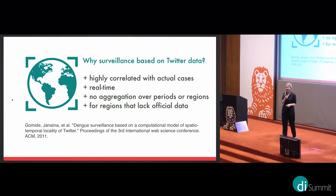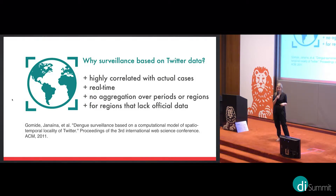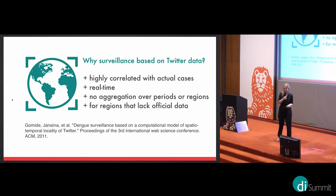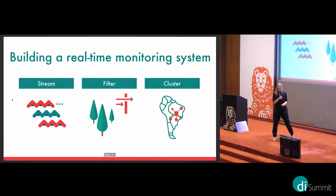Twitter data is also very useful for regions that lack official data. There are regions where dengue is known to exist but the government does not report on it. If there is internet connection and people are willing to tweet about dengue — which they apparently are — this kind of system can shed light on dengue outbreaks in those regions.